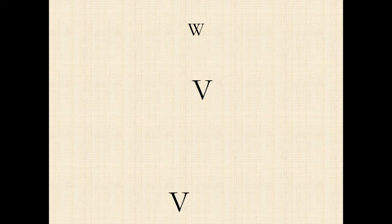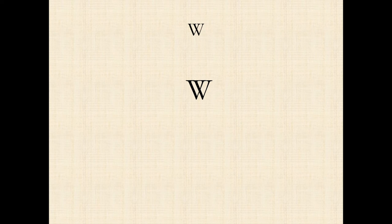W comes much later in the development of Germanic languages. In Latin, if you have a V — really a U — followed by another vowel, it becomes a W sound in classical Latin. If they wanted this W sound, they just basically pushed two U's together. That's why we call it W — it means two U's joined together.